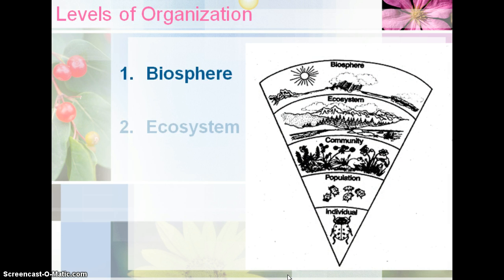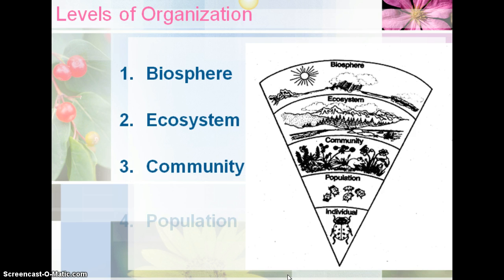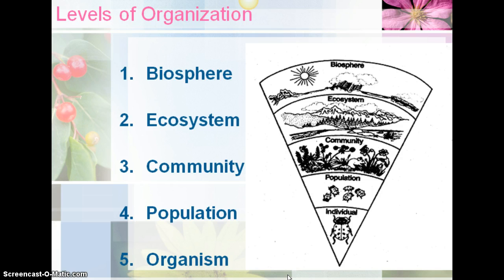Our levels of organization include biosphere, ecosystem, community, population, and organism. It goes from the most broad at the top with biosphere to the most specific being organism — the individual unit we're studying. You can see there's a triangle in your notes packet showing how biosphere is most broad, all the way down to the organism or individual at the bottom. If you aren't using the notes packet, you may want to draw that in.